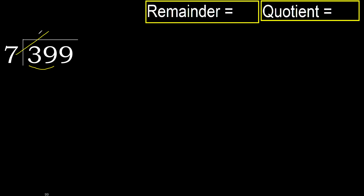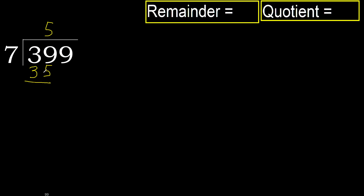7 multiplied by which number is nearest to 39 but not greater? 7 multiplied by 6 is 42, which is greater. Multiply by 5: 35 is not greater. Subtract: 39 minus 35 is 4.